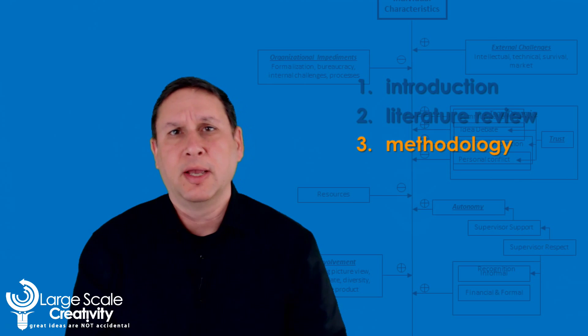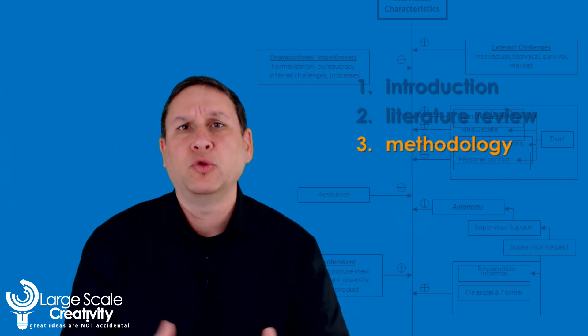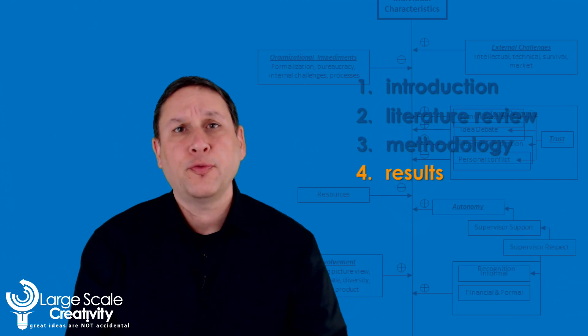The third one, the methodology. How did I go about researching? What were the methods? What were the tools? How did I decide who the participants are? The fourth one are the results. What did I find out? It is both qualitative and quantitative with some statistical data.